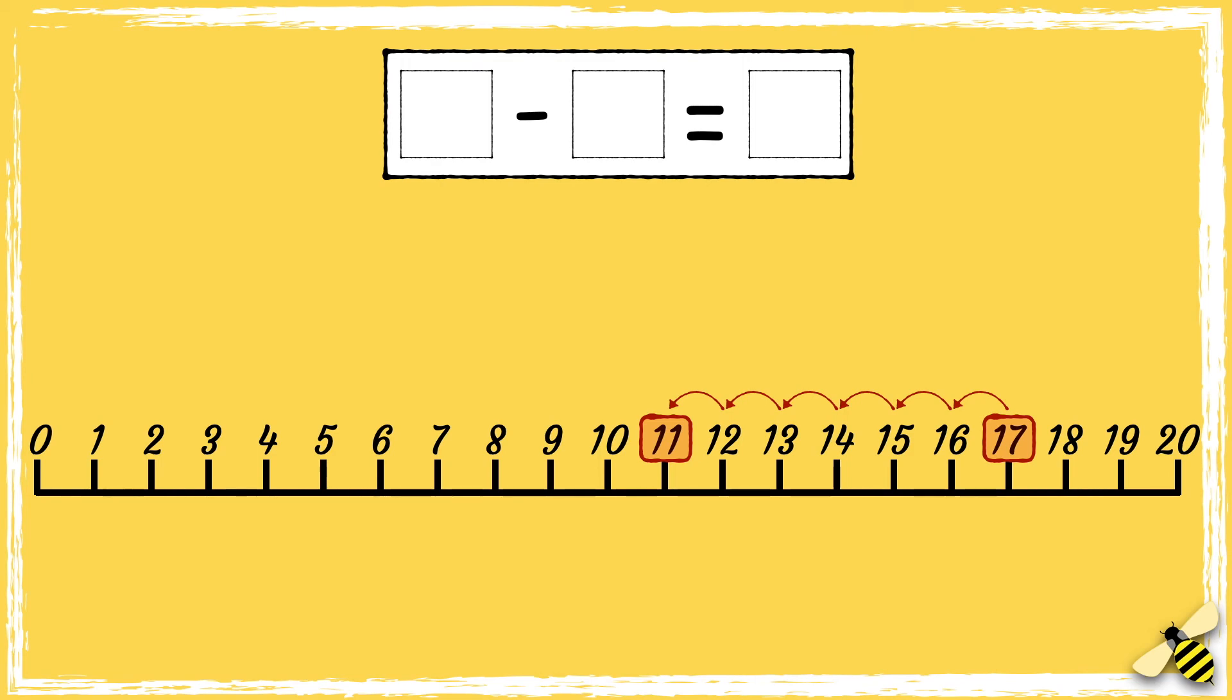started on 17, so 17 is the first part of our number sentence. We've jumped back six times, so we've taken away 6, and the number we've landed on is 11, so 11 is the answer.